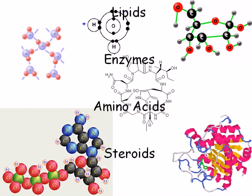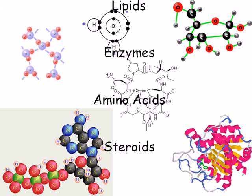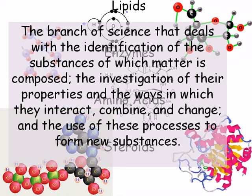While this module will present some basic chemistry, throughout this course we will repeatedly return to the basics of chemical structure, interaction, and function. Chemistry is the branch of science that deals with the identification of the substances of which matter is composed, the investigation of their properties and the ways in which they interact, combine, and change, and the use of all these processes to form new substances.